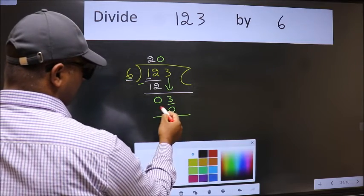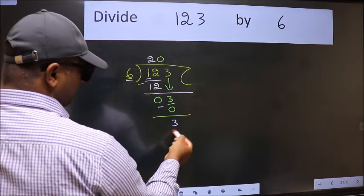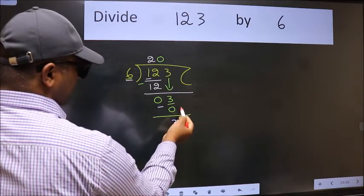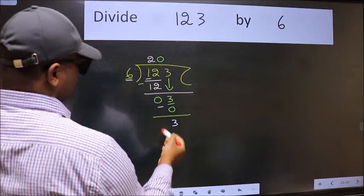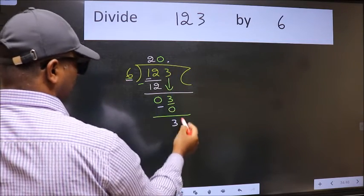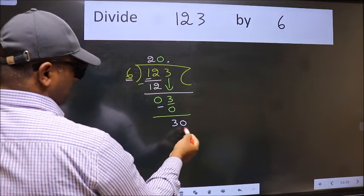Now we subtract. We get 3. Over here, we did not bring any number down, and 3 is smaller than 6. So now we can put the decimal point and take 0. So 30.